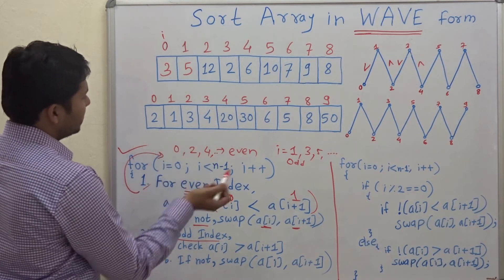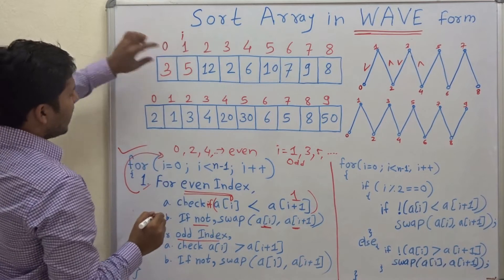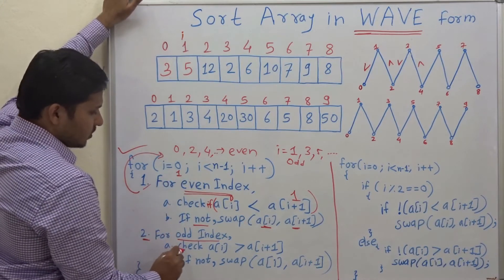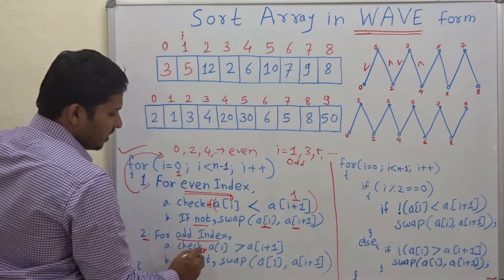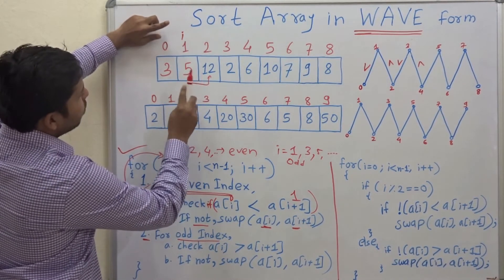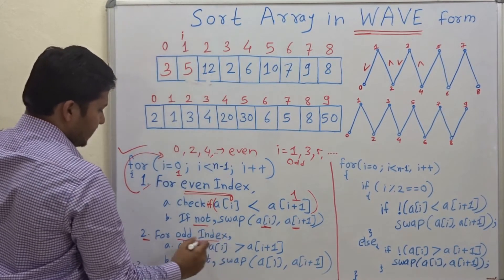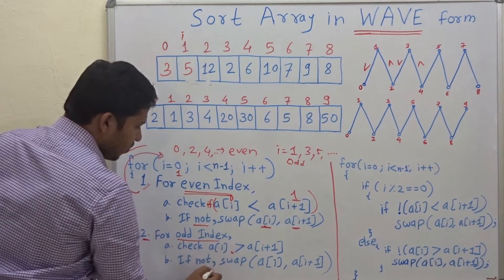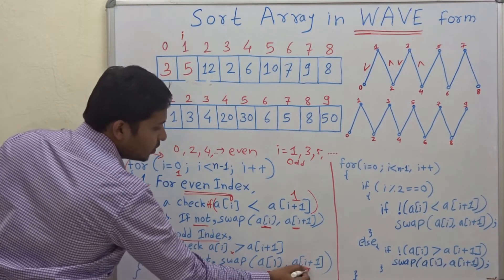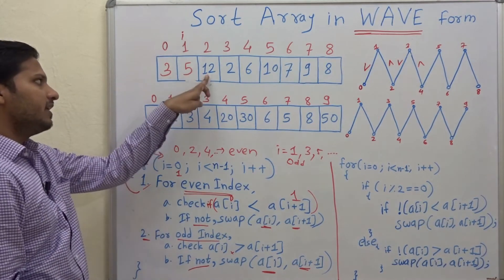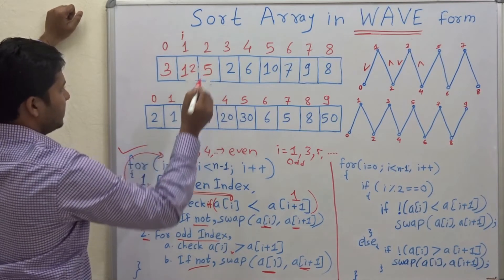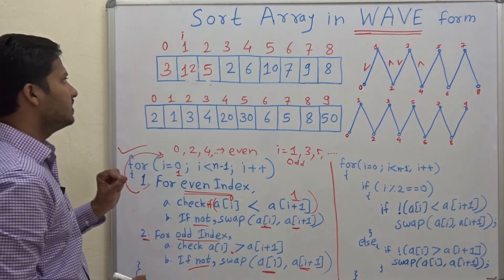Now i becomes 1, which is an odd index. For odd indices, check whether a[i] is greater than a[i+1] — that is, whether 5 is greater than 12. No, it is not, so this condition is not satisfied. When the greater-than condition is not satisfied for an odd index, you have to swap those two elements. So 12 comes to index 1 and 5 goes to index 2.